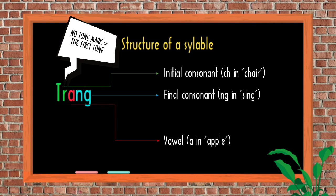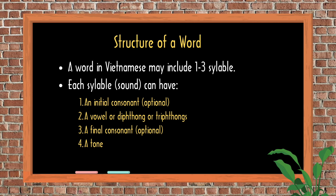One interesting thing about Vietnamese is each letter or a combination of letters has a fixed pronunciation. A in the middle of my name is always pronounced as in 'apple' or 'map' in English. So once you master the basic pronunciation, you can read out loud everything in Vietnamese even without understanding. If you speak Mandarin Chinese, Vietnamese is very similar to Chinese Pinyin in this aspect. And I can say, if you speak English, you can guess the pronunciation of a Vietnamese syllable correctly 70% of the time.